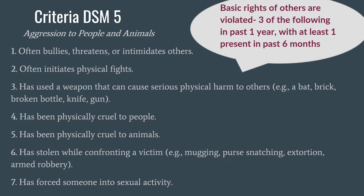The first category is aggression towards people and animals. The patient often threatens or intimidates others and is often found to initiate physical fights. The patient has used a weapon that can cause physical harm to others — for example, a bat, a brick, or a broken bottle. They have been physically cruel towards people and physically cruel towards animals, have stolen while confronting a victim — for example, engaged in armed robbery — and has forced someone into sexual activity.